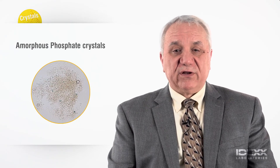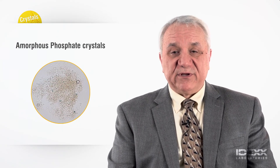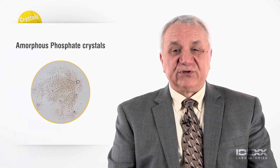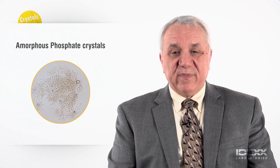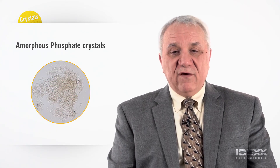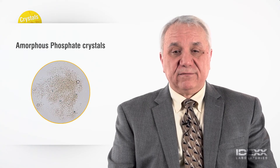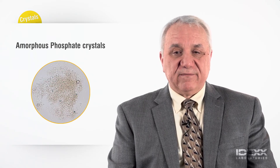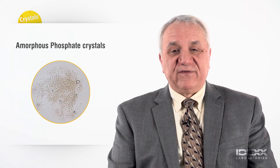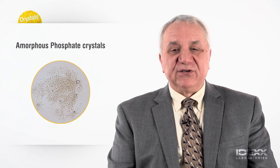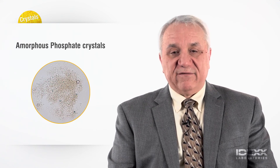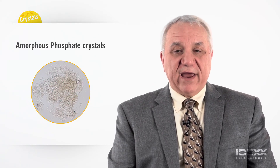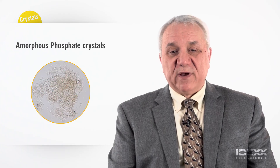Amorphous phosphate crystals are relatively common in alkaline urine specimens and they have no clinical significance. They are described as granular precipitates with no definitive shape, and they are morphologically indistinguishable from amorphous urate crystals. However, amorphous urate crystals are seen in acid urine specimens. The primary importance for amorphous phosphate crystal identification is to assure that they are not misidentified as cocci bacterial forms. This is a great application of the air-dried and stained preparation of a concentrated urine specimen.